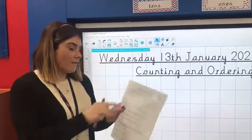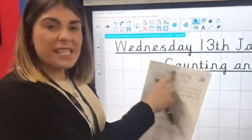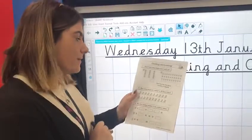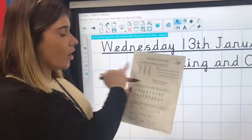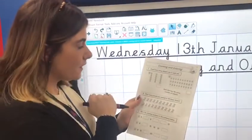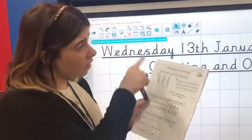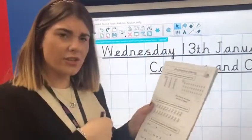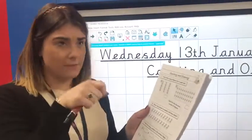We're focusing today on counting and ordering. This page is really focusing more on counting. Number 1 asks you to count how many shapes are in each set. We could just count 1, 2, 3, 4, but we're in Year 2, we're better than that. We can count in groups.